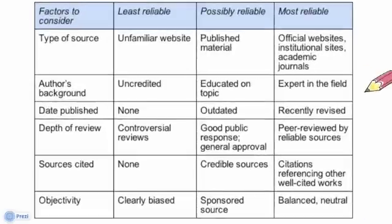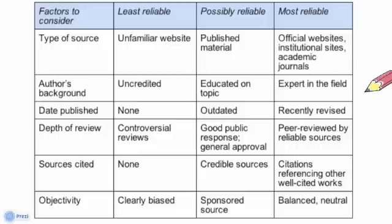Using the guided notes, there's a chart with factors to consider rated as least reliable, possibly reliable, and most reliable. For source type: an unfamiliar website is not very reliable; published material like a magazine article or something published online is more reliable; an official website, institution site, or academic journal is the most reliable. For the author's background: being uncredited or just a random blogger is least reliable; being educated on the topic is possibly reliable; being an expert in the field is most reliable.